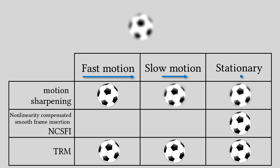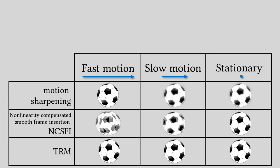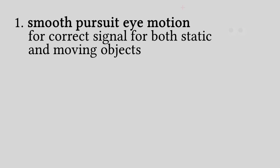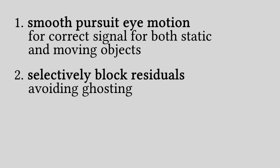TRM combines several ideas to radically reduce the rendering resolution and address shortcomings of previous methods. Firstly, we take advantage of smooth pursuit eye motion to generate a physically correct signal for both static and moving objects. Previous methods, such as NCSFI, had to halve the frame rate to correctly compensate for motion. Secondly, we noted that moving objects do not need to contain high frequency details to appear sharp due to the motion sharpening effect. For that reason, we could selectively block a residual buffer, which let us avoid ghosting artifacts found in previous methods.